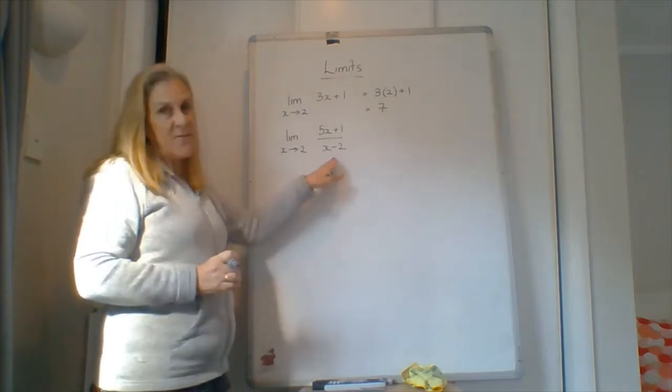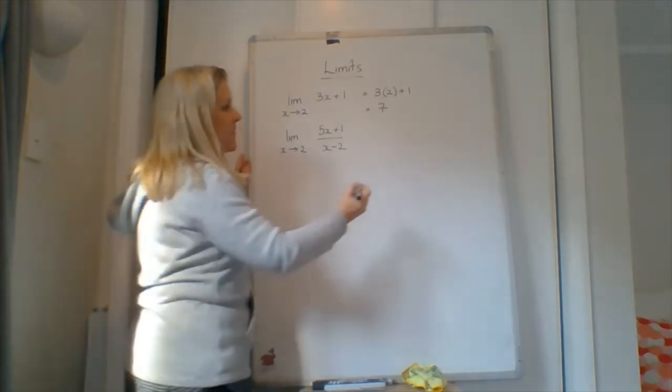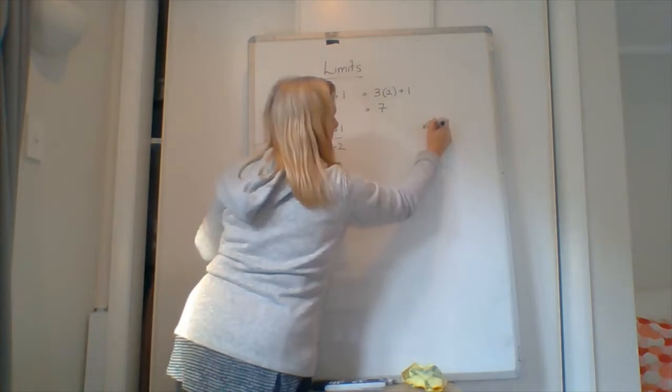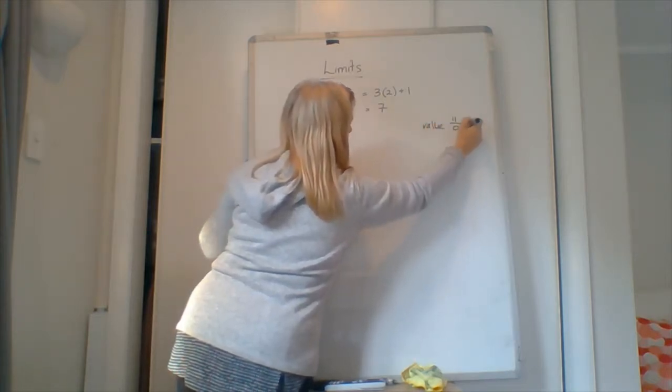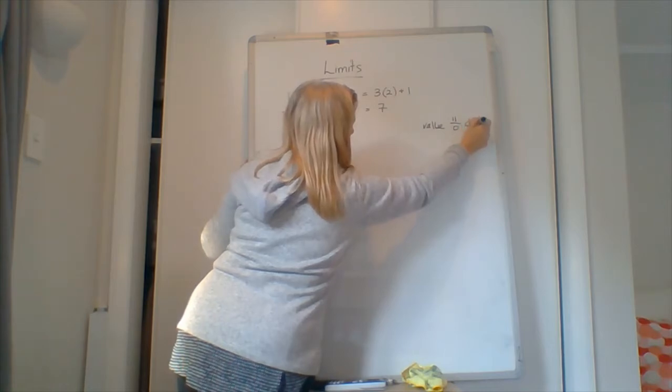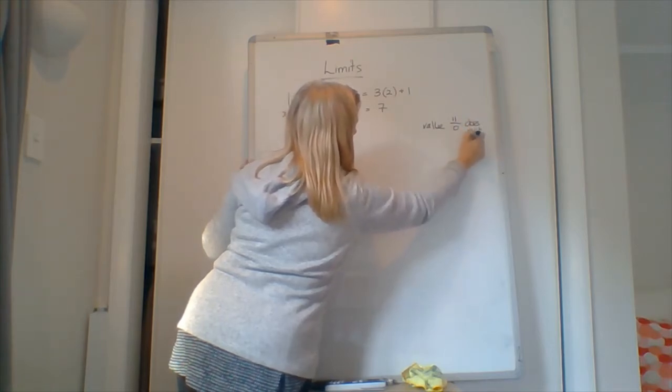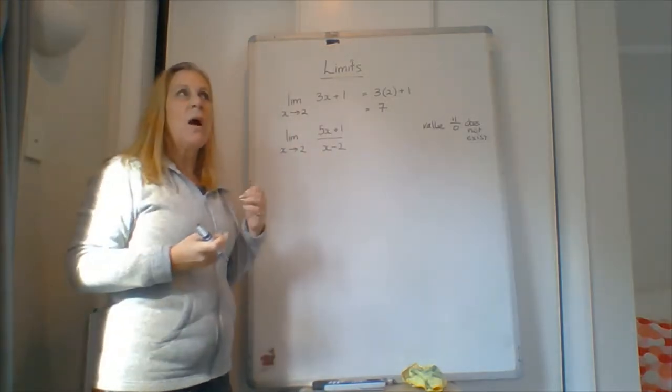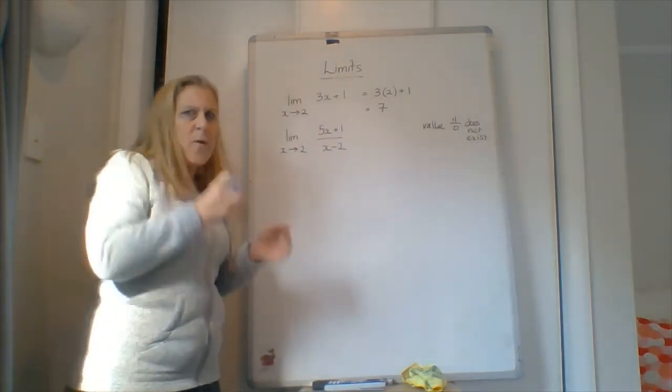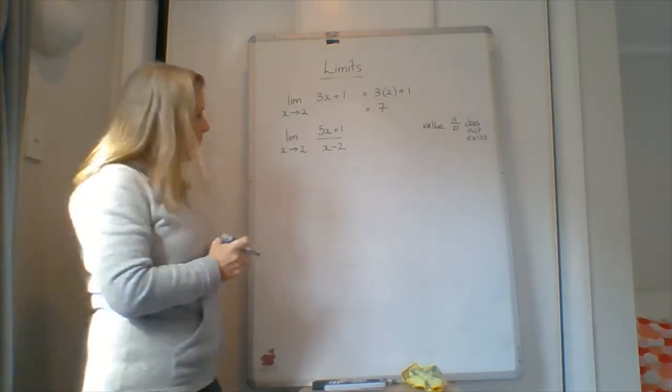We're not interested in the value. So the value is going to be 11 over 0, so it doesn't exist. But we're looking for the limit. We're looking for, if it did exist, whereabouts might it be? So what we need to do is we need to look at what's happening when this gets very big and very small.